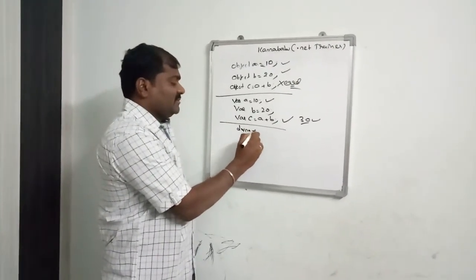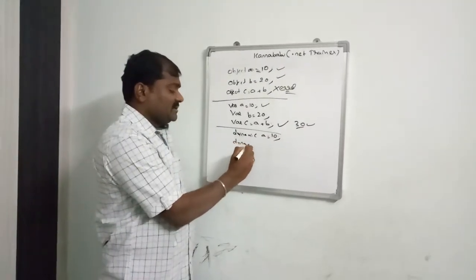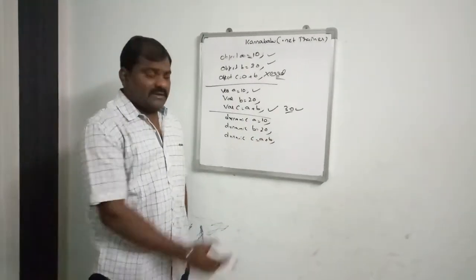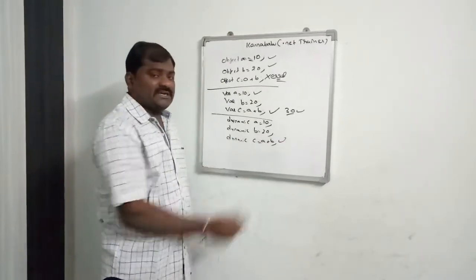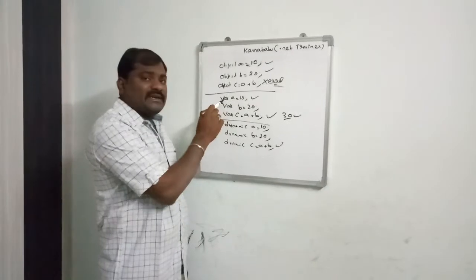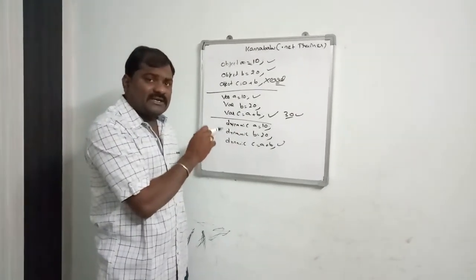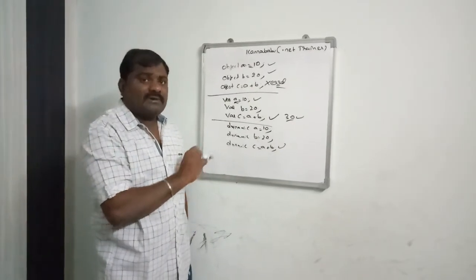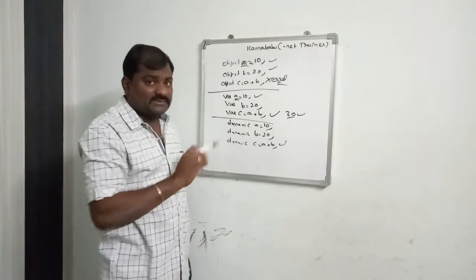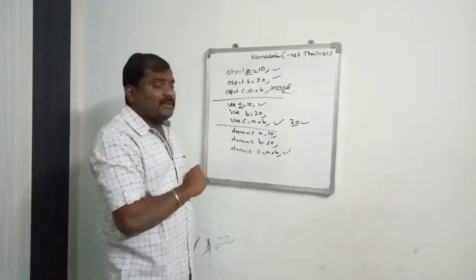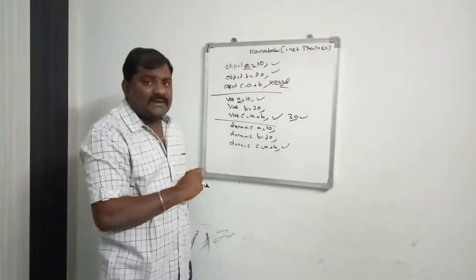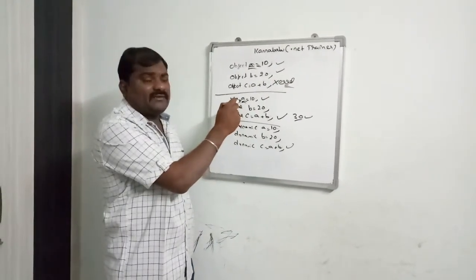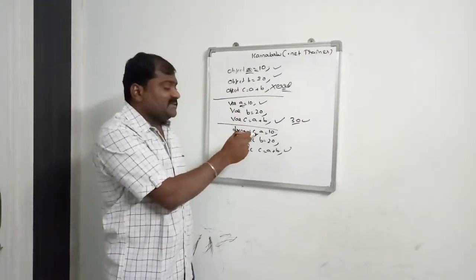Similarly for dynamic: dynamic a = 10 — valid. Dynamic b = 20 — valid. Dynamic c = a + b — valid. Here a is integer, b is integer, so integer plus integer is integer — it is valid. Whatever value you store in var is of anonymous type; whatever you store in object is of object type, not a specific type. One important point: with var the data type is decided at compile time, with dynamic the data type is decided at runtime based on the value stored.